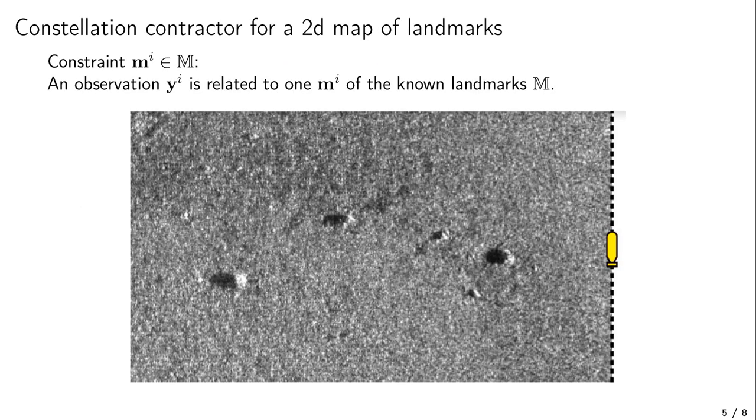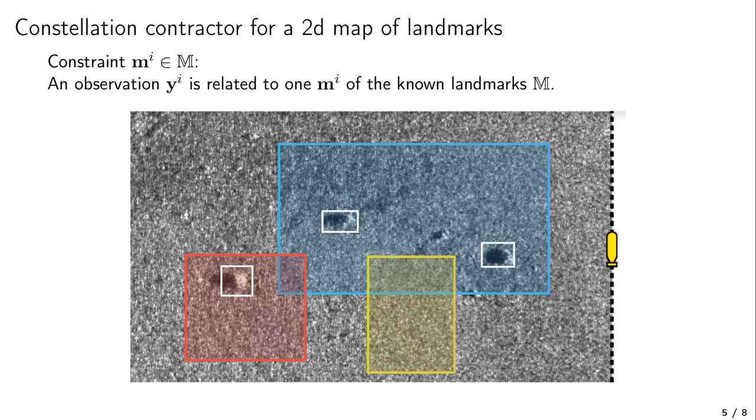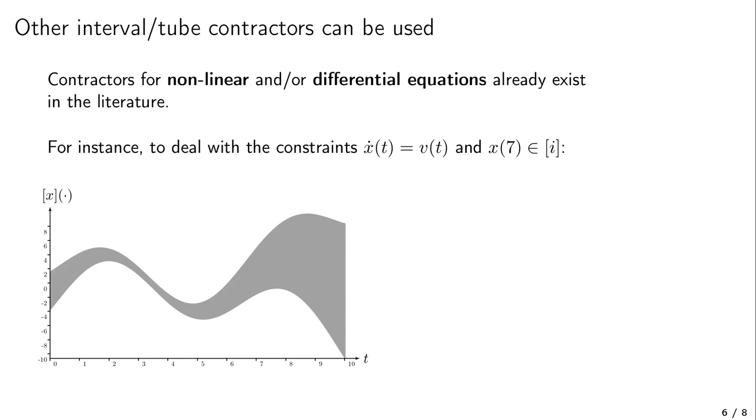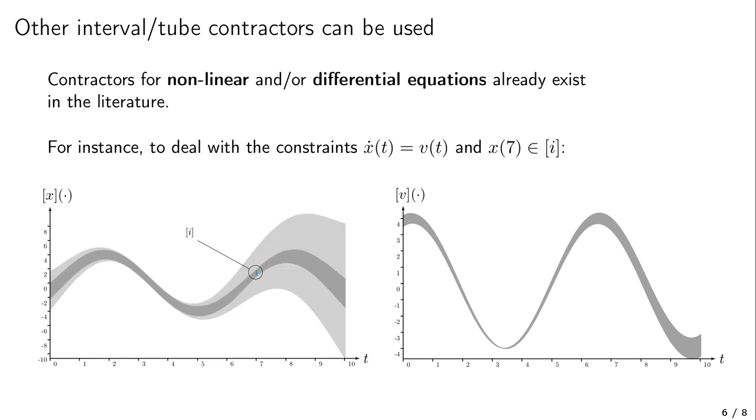For the map constraint, we will extend the previous contractor to the two-dimensional case. This means that we are now contracting 2D boxes as presented in this figure. The vectors Mi are depicted in white, and the feasible values for identifying the rocks are drawn with colored boxes, that are contracted thanks to the information provided by the map. Other contractors exist in the literature to handle the state equations. It is easy to combine them in order to reach the complexity of the problem we are dealing with. For differential constraints, for instance, the one encountered for the evolution function, we can apply contractors on sets of trajectories. In this illustration, we provide a tube X together with its feasible derivative V, presented on the right-hand side. Using a dedicated contractor, we are able to contract the tube X so that we only keep the envelope of trajectories that are crossing the I interval at time 7.